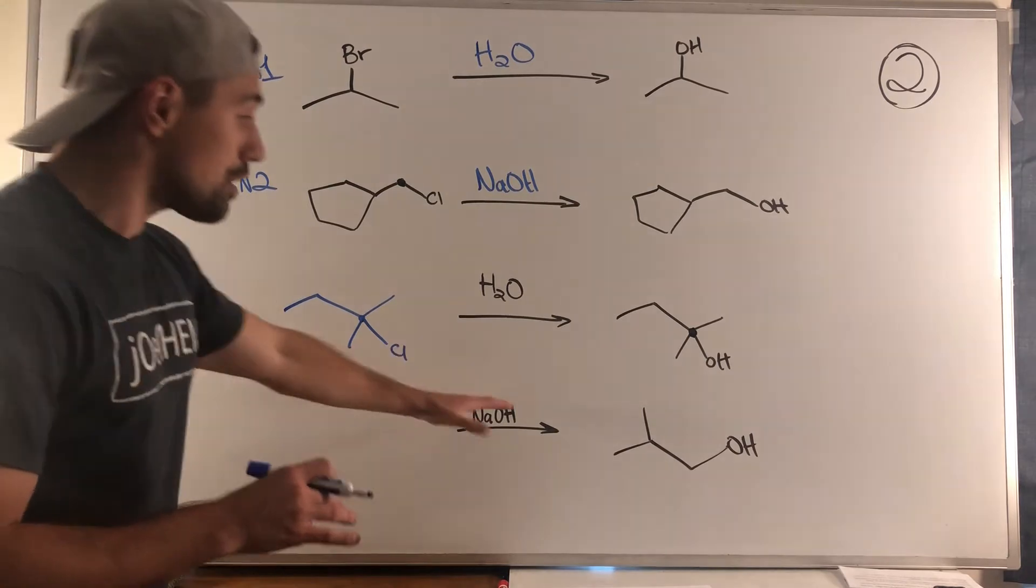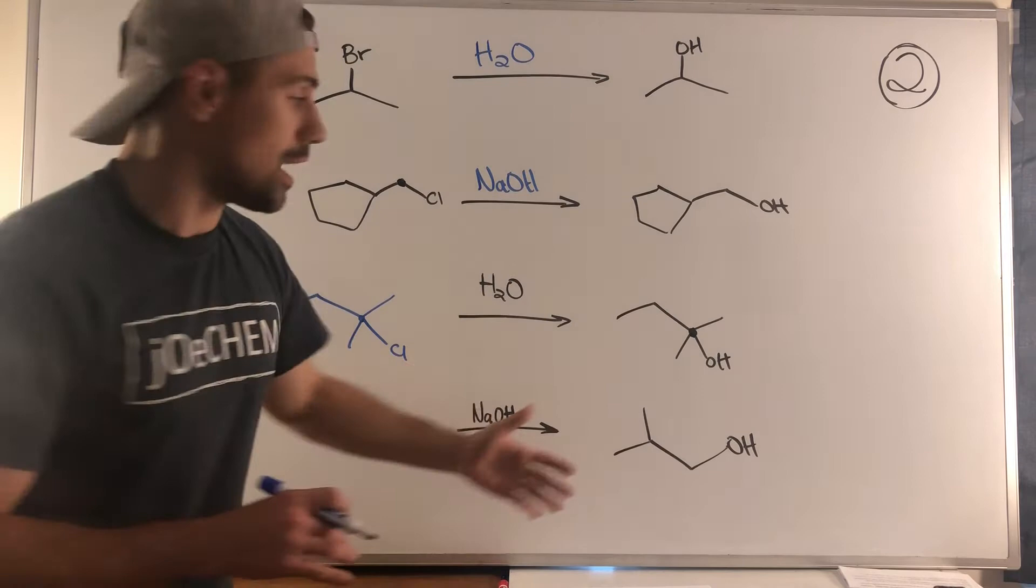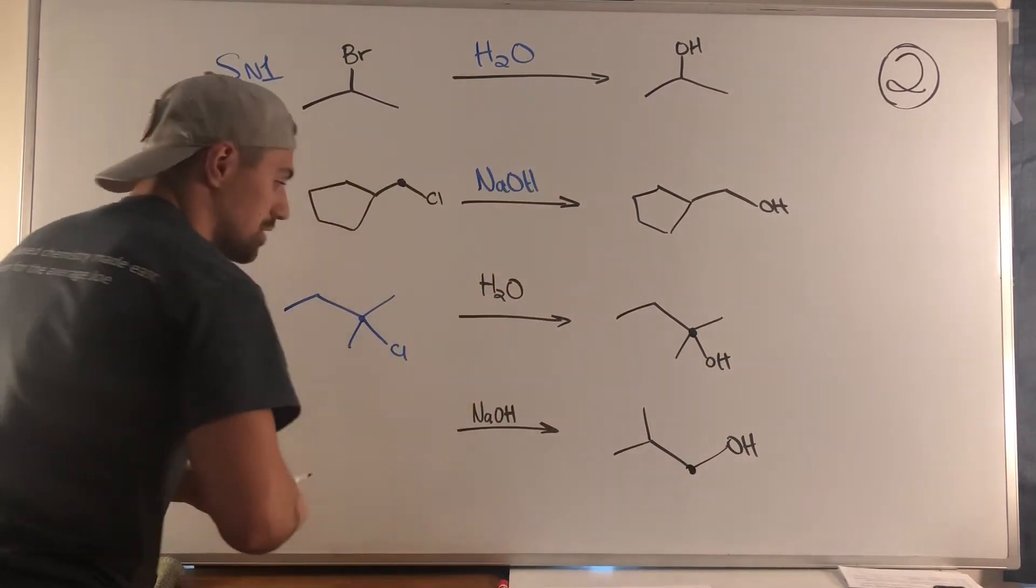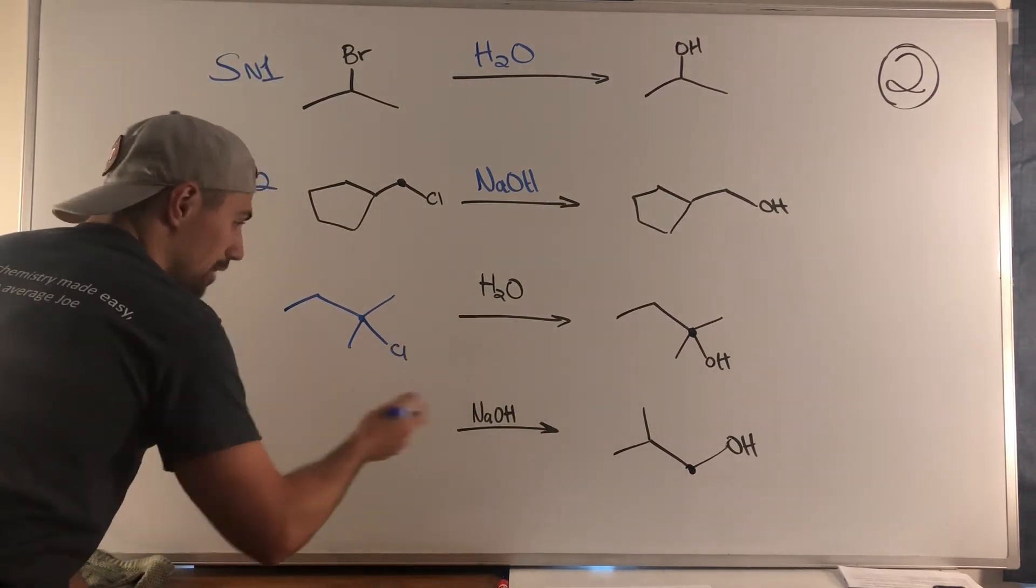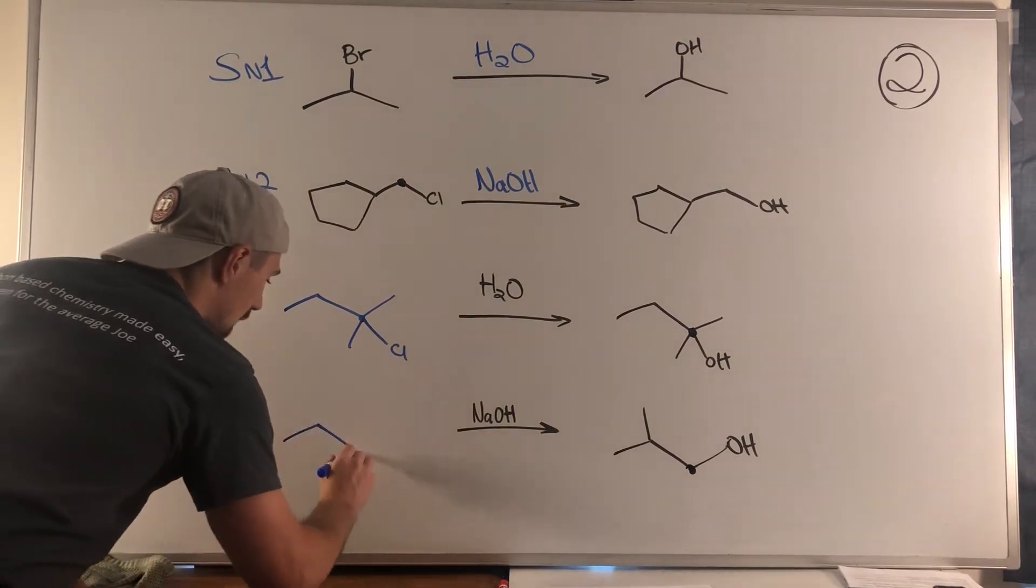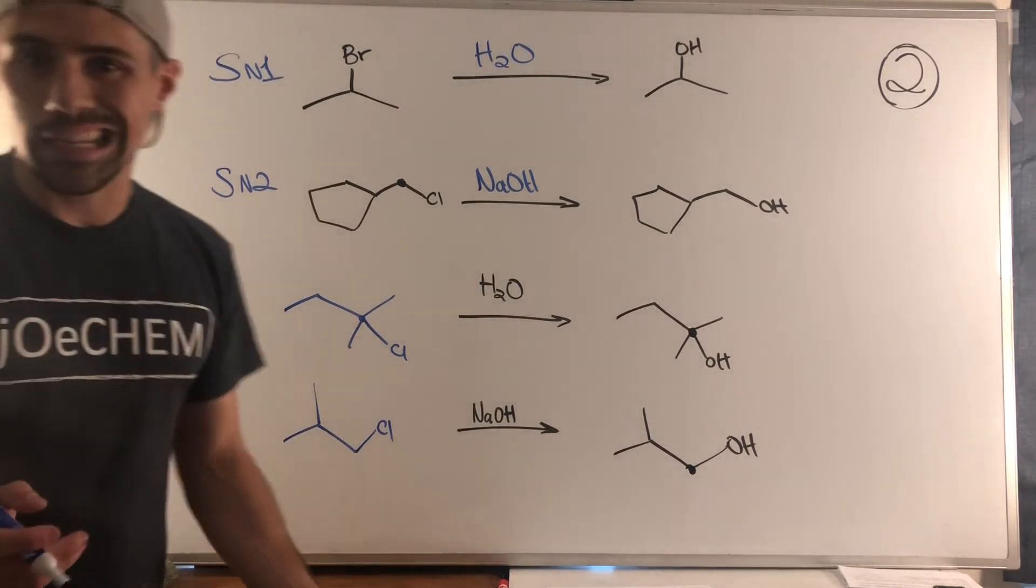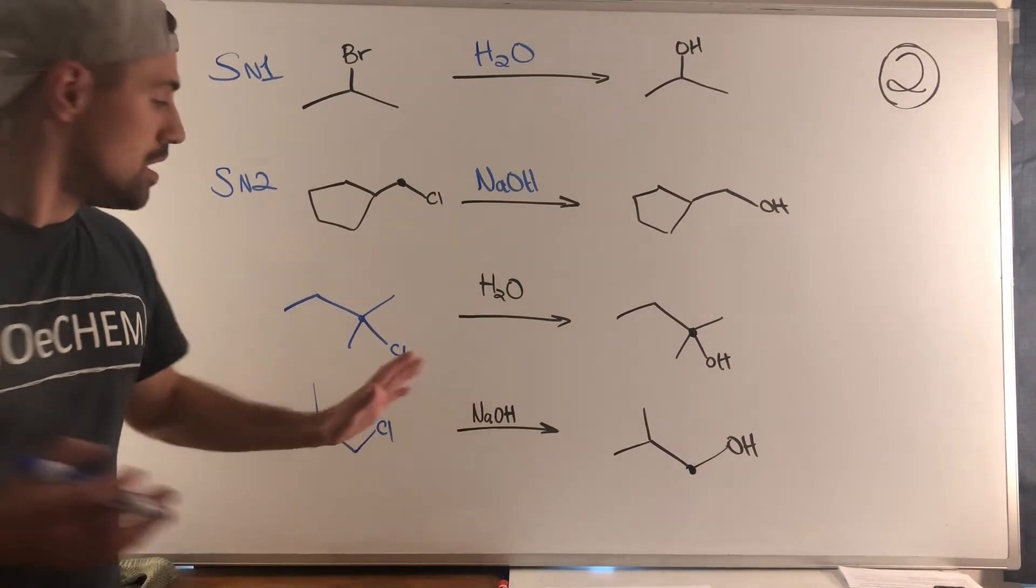Looking at this one, we have isobutyl alcohol, a primary alcohol, and we have sodium hydroxide. We just need to provide a good situation where SN2 would work. You can use chlorine, iodine, bromine, tosylate, whatever you want to use.